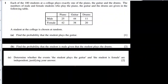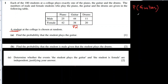Each of the 180 students at a college plays exactly one of piano, guitar, and drums. The number of male and female students who play each instrument are given in a table. A student is chosen at random. Find the probability that the student plays the guitar. 82 students play guitar: 44 plus 38 equals 82 out of 180. Simplifying, that is 41 out of 90.